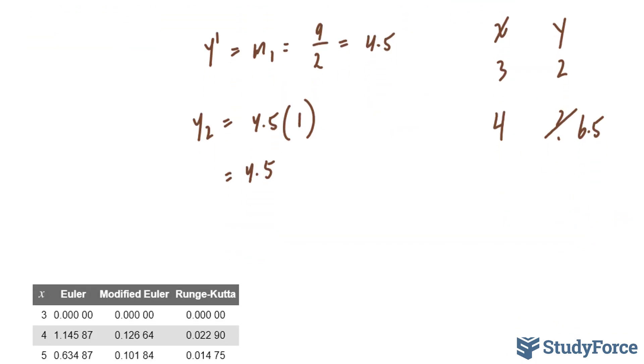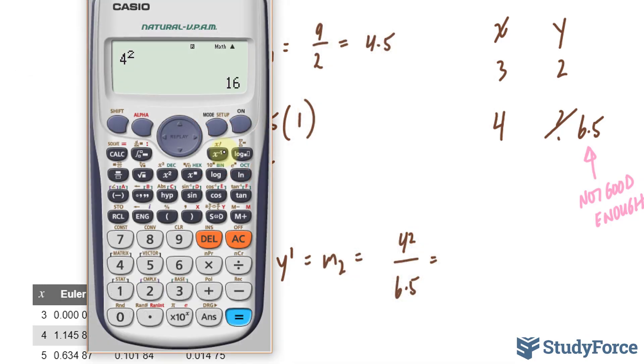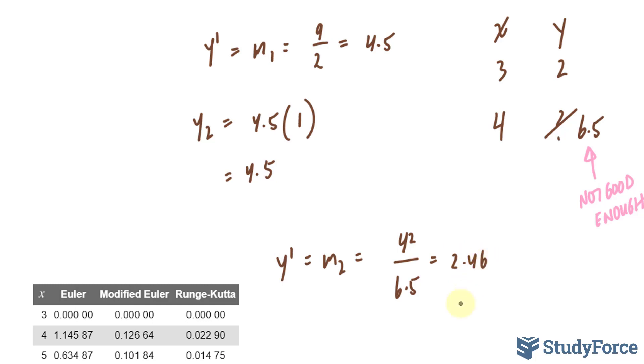Although according to the modified Euler's method, this number is not good enough. We want to do a better job than 6.5, and there's a better mousetrap to this. What you do is take this point (4, 6.5) and find its slope. We have y' = our second slope, and our formula was x²/y. So we have 4²/6.5, which gives us approximately 2.46.